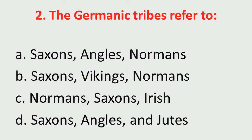Second question: based on the passage, the Germanic tribes refer to — A) Saxons, Angles, Normans; B) Saxons, Vikings, Normans; C) Normans, Saxons, Irish; D) Saxons, Angles and Jutes. Remember, English for competitive exams is not just literature — you may find questions pertaining to language, grammar, and linguistics such as indicative, subjunctive, or reflexive pronoun.